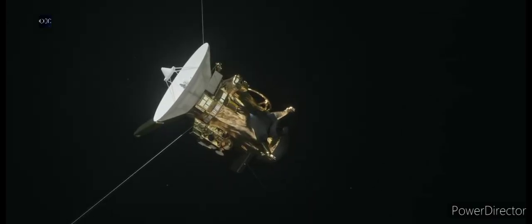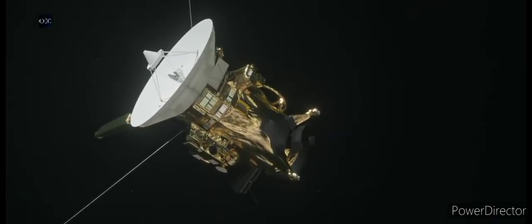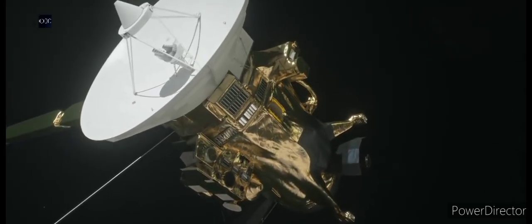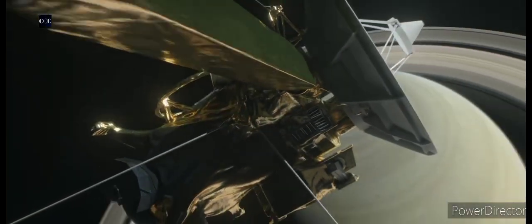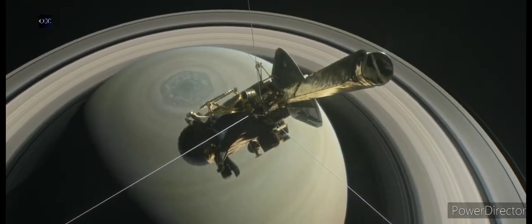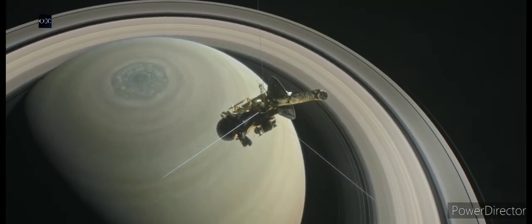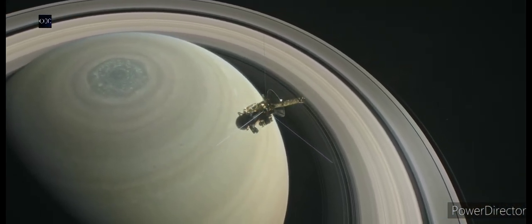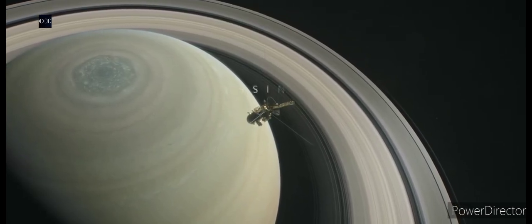After 20 years in space, NASA's Cassini spacecraft is running out of fuel. And so, to protect moons of Saturn that could have conditions suitable for life, a spectacular end has been planned for this long-lived traveler from Earth.